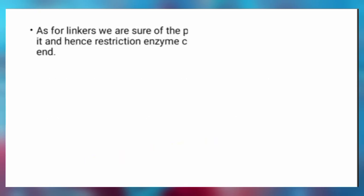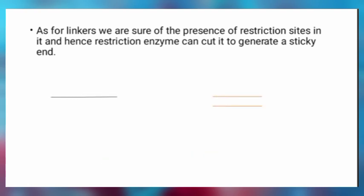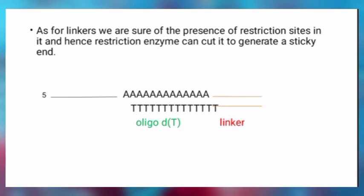What we use linkers for is that during the synthesis of the cDNA molecule — that is, during the first strand synthesis — we attach the linkers to the oligo-dT primer. At the end of the second strand synthesis, the final cDNA molecule is going to have some of its portion being the linker. Hence, we can ascertain that there is a Restriction Site located in it, and then a Restriction Enzyme can cut through those Restriction Sites and generate a sticky end, leading to easy incorporation of the cDNA molecule into the plasmid or any other vector.